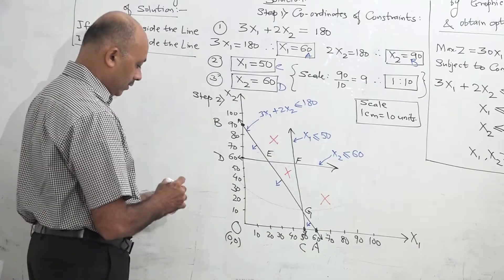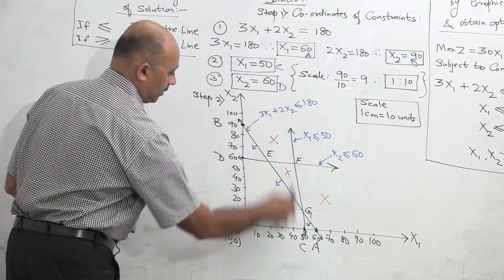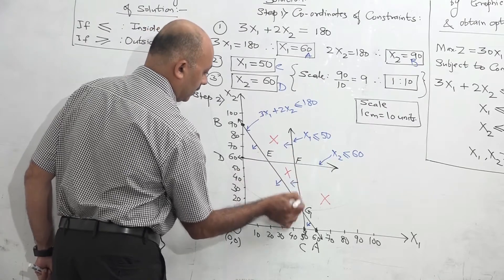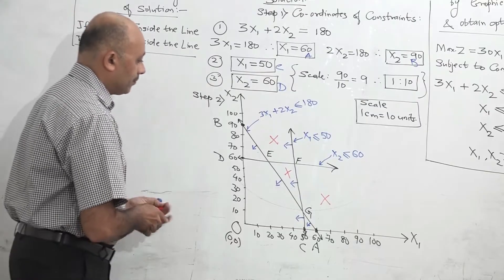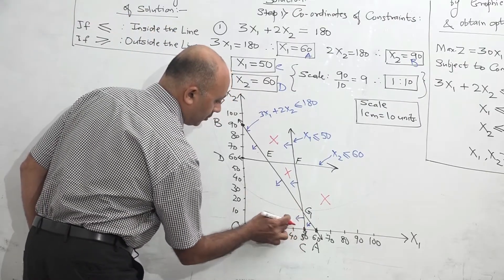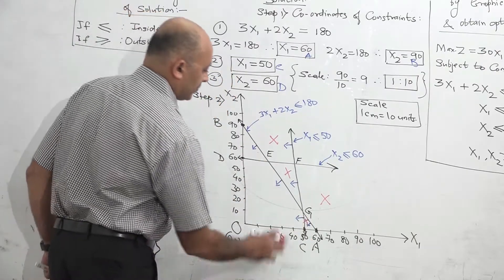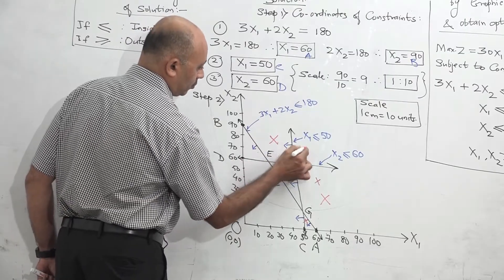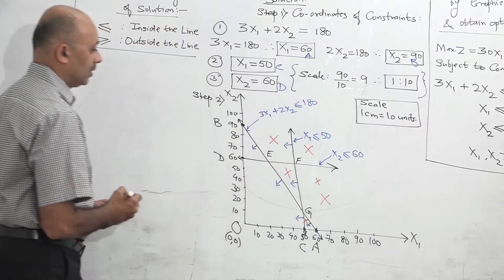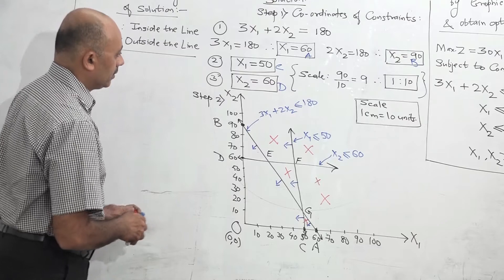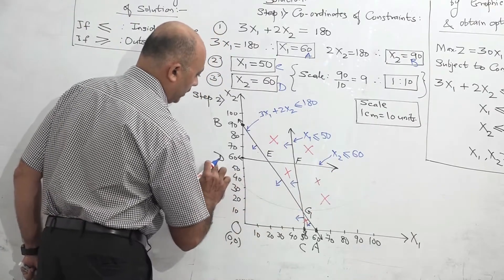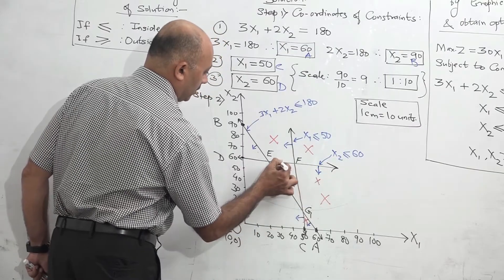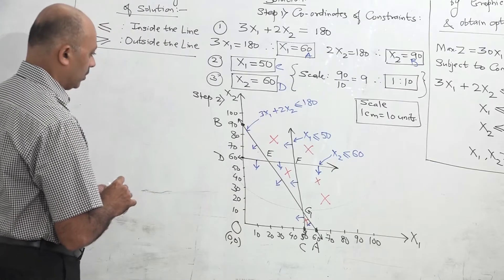Now we do the same procedure for line number 2, that is point C. Again the sign is less than, so the region has to be inside the line. Start from C to G — since region is inside, this small triangle cannot be the solution, so cancel. From G to F — again inside, this part is already cancelled. Then above F — region is inside — so this part cannot be possible either. Now the last remaining line is line number 3, starting from D. Constraint is x2 less than or equal to 60, so region must be inside. From D to E — this triangle is cancelled.